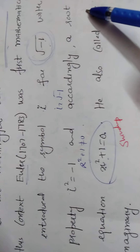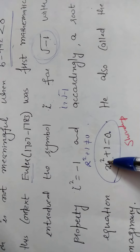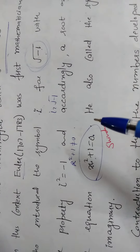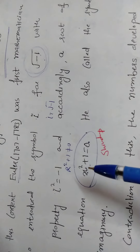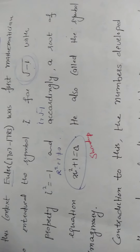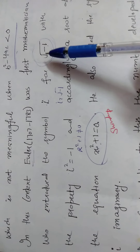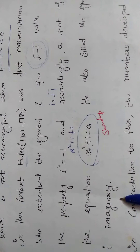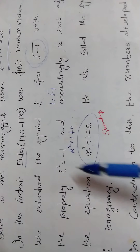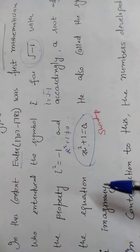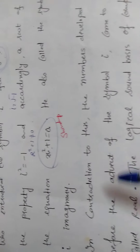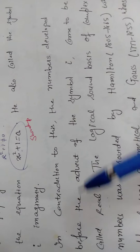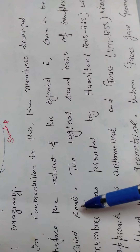So there must be some other space where the solution of this equation lies. These types of equations gave us the thought process that there must be another number system where the solutions exist. Euler was the first mathematician who gave the symbol iota to the square root of minus 1 and called this system imaginary. Before the invention of iota, numbers were just called numbers; afterward, the previous number systems were called real numbers.